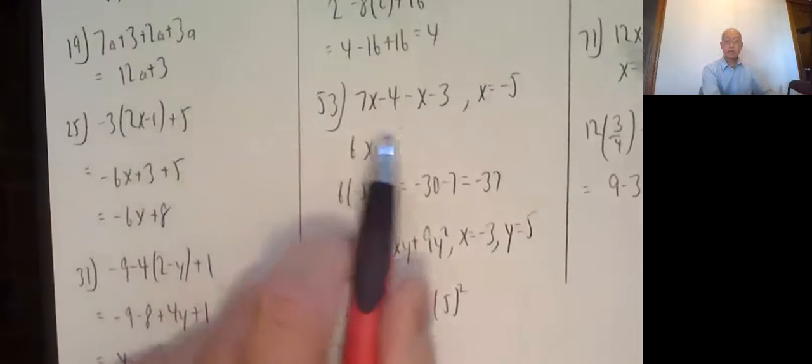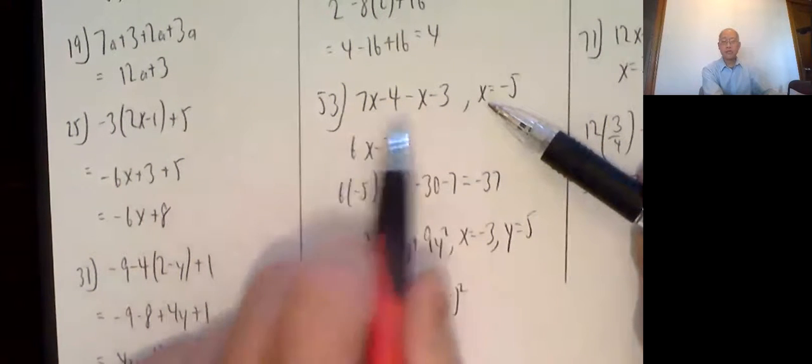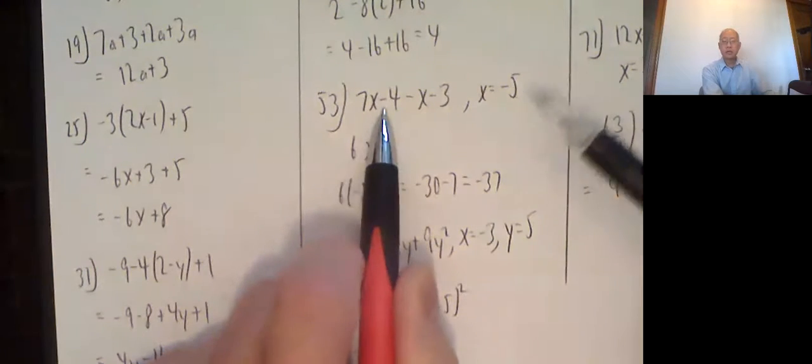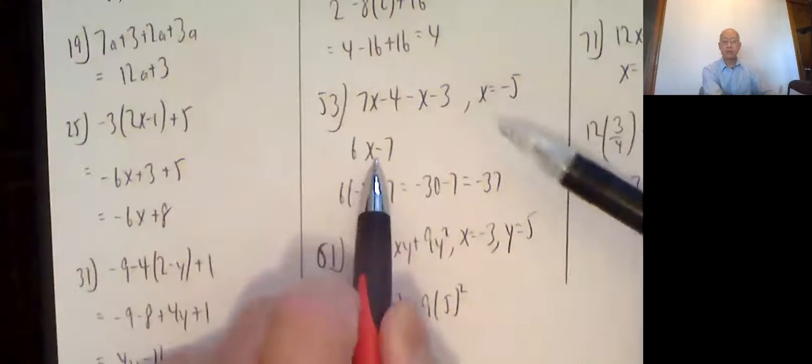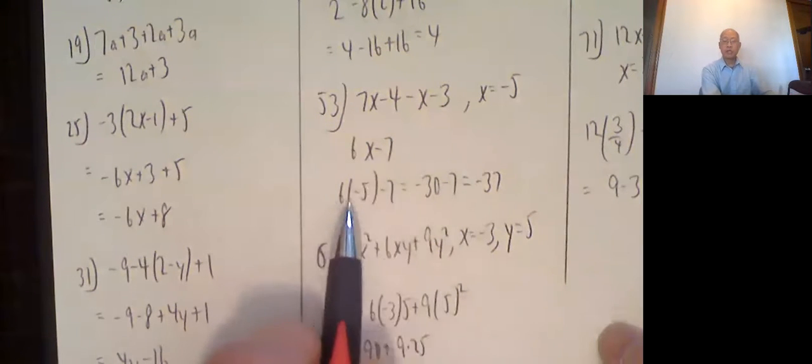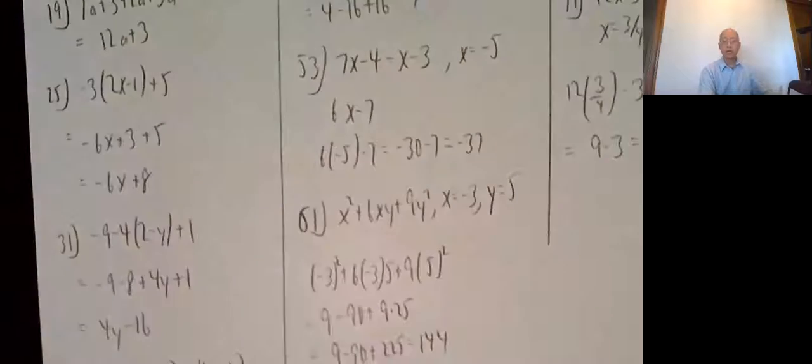53, take this expression and plug in negative 5. We will simplify first. 7x minus x, that's like minus 1x, 6x. Negative 4 minus 3 is a negative 7. And now we plug in negative 5 for x. 6 times negative 5 is a negative 30. Negative 30 minus 7 is a negative 37.